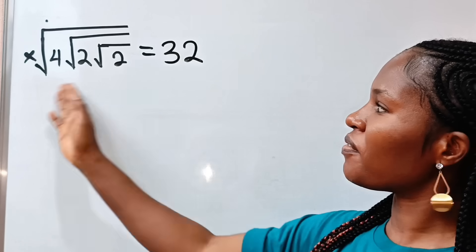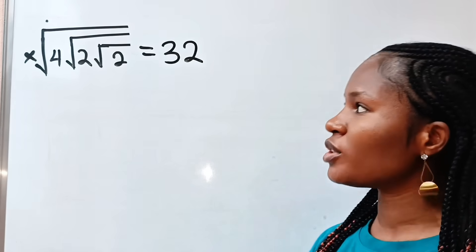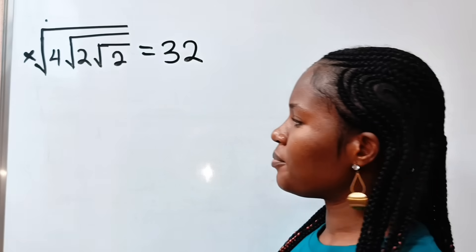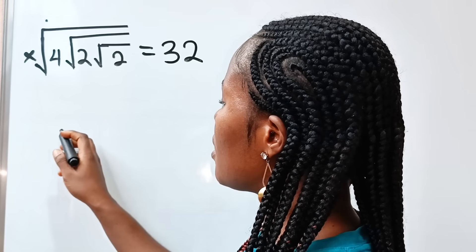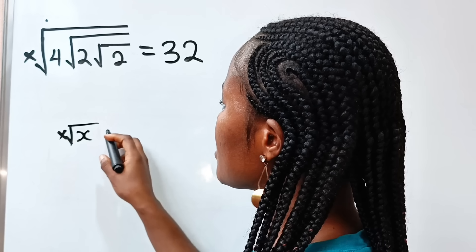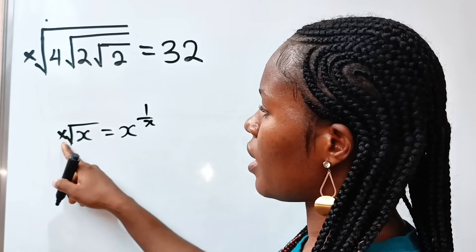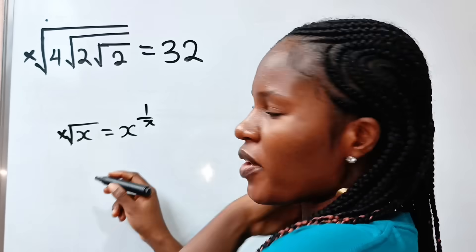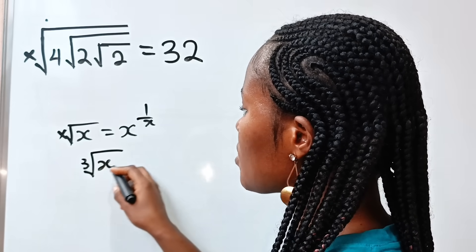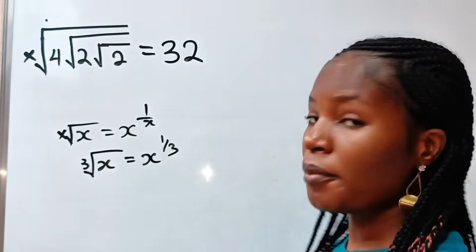Now first, we need to simplify especially the left hand side of this equation. To do that, remember that the x-th root of x is equal to x to the power of 1 over x. So for example, if we have the cube root of something, it should be x to the power of 1 over 3.